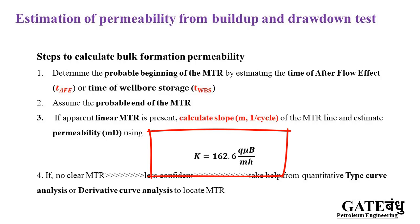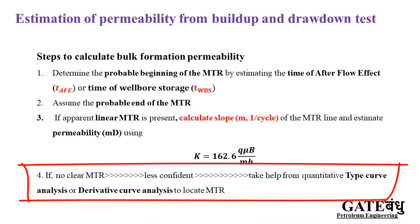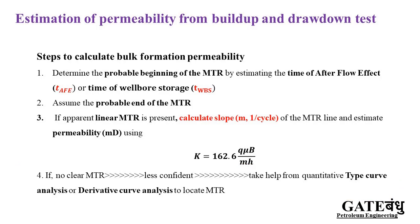The permeability equation is: k = 162.6 × q × μ × B divided by m (the slope) times h (the height of the pay zone). One of the crucial aspects here is the estimation of the MTR. If we are not confident enough to select the MTR region, quantitative help from type curve analysis or derivative curve analysis is taken to locate the MTR region, and then for that region only the slope is calculated.